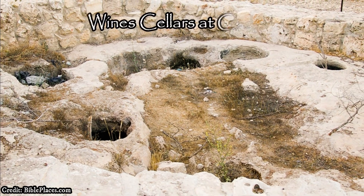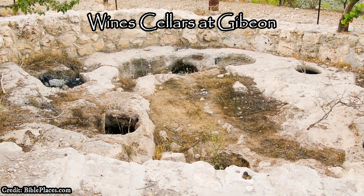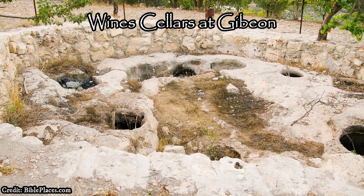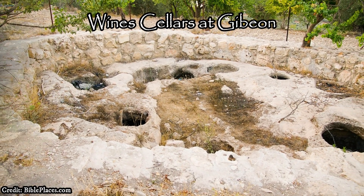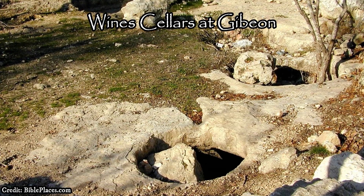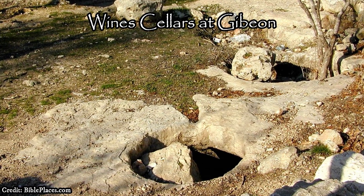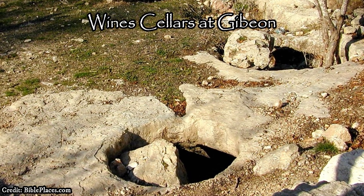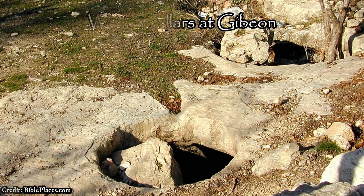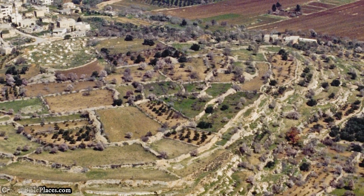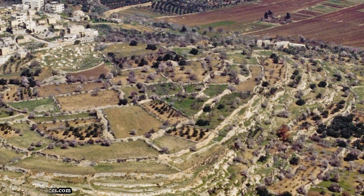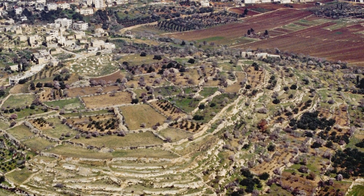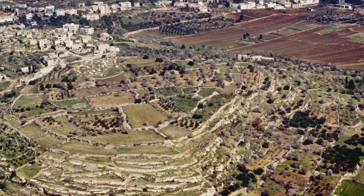The discovery of many different artifacts related to wine production and storage have been found at the site of Gibeon, which suggests that it was an important center for wine production during the latter period of the kingdom of Judah. However, after its destruction in the 6th century BC by the Babylonians, the city was abandoned.